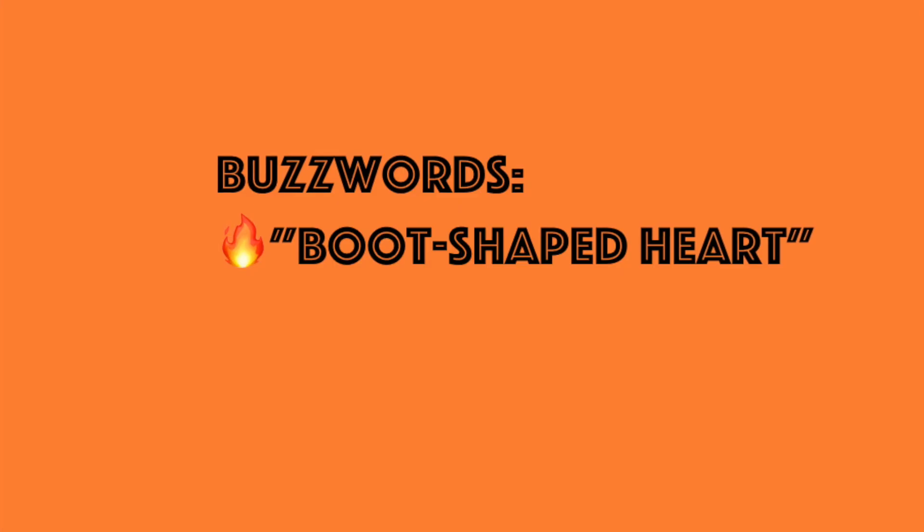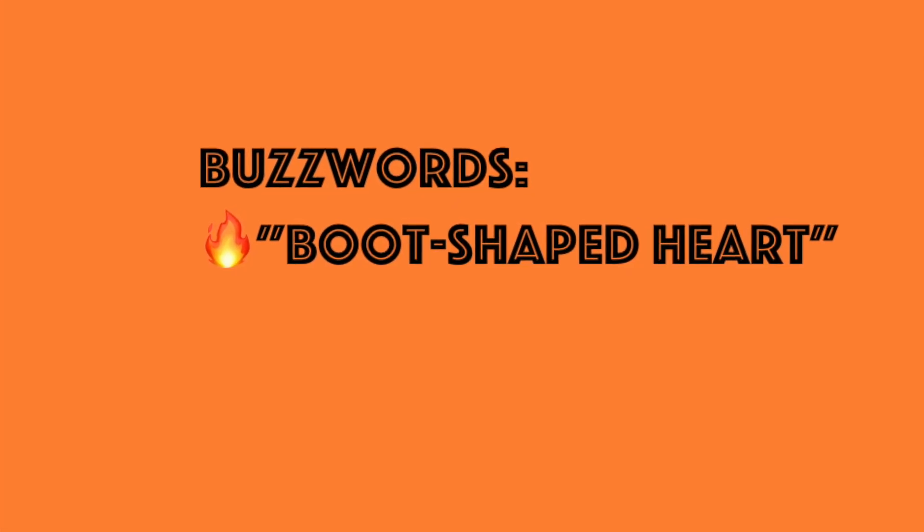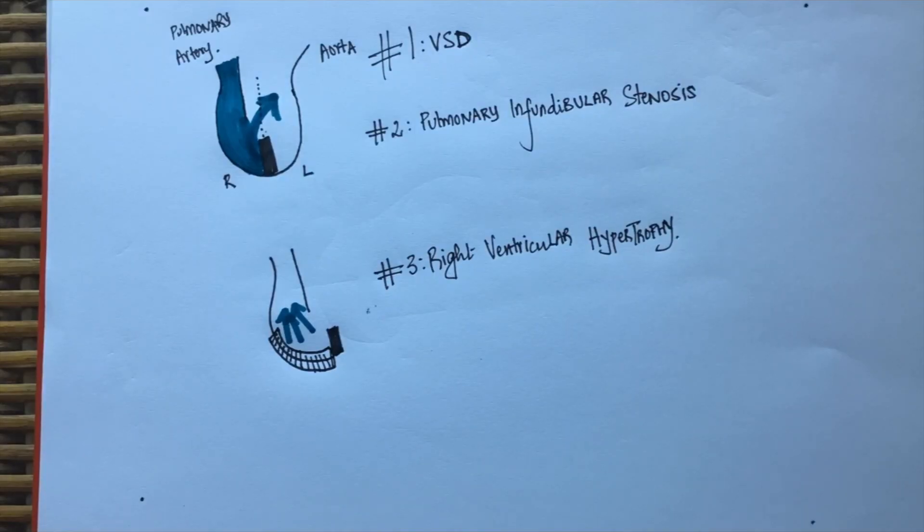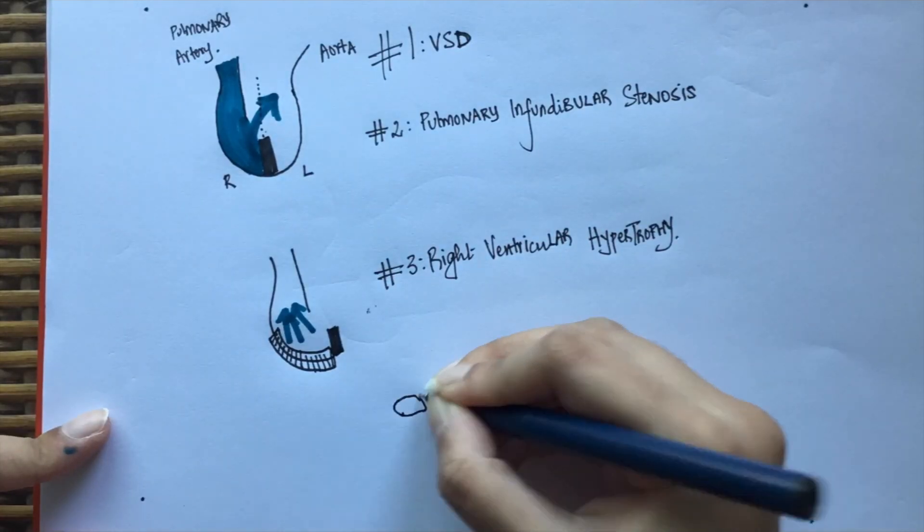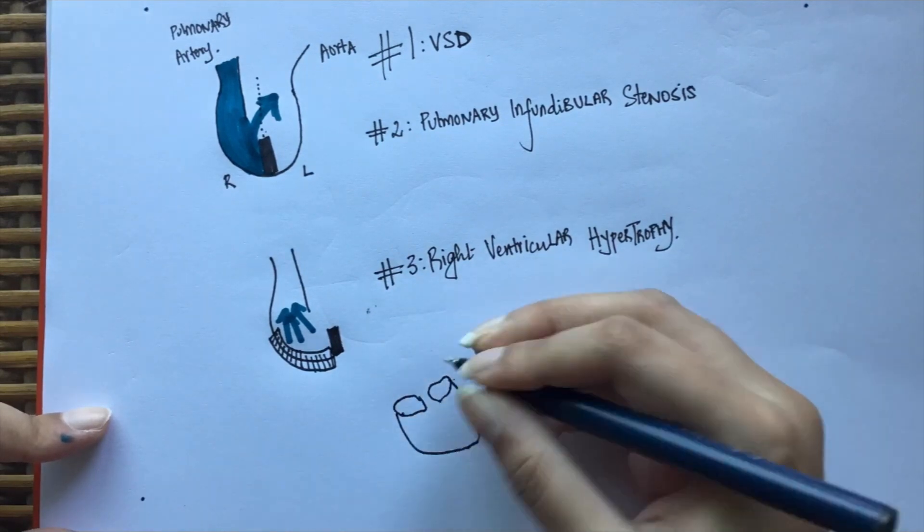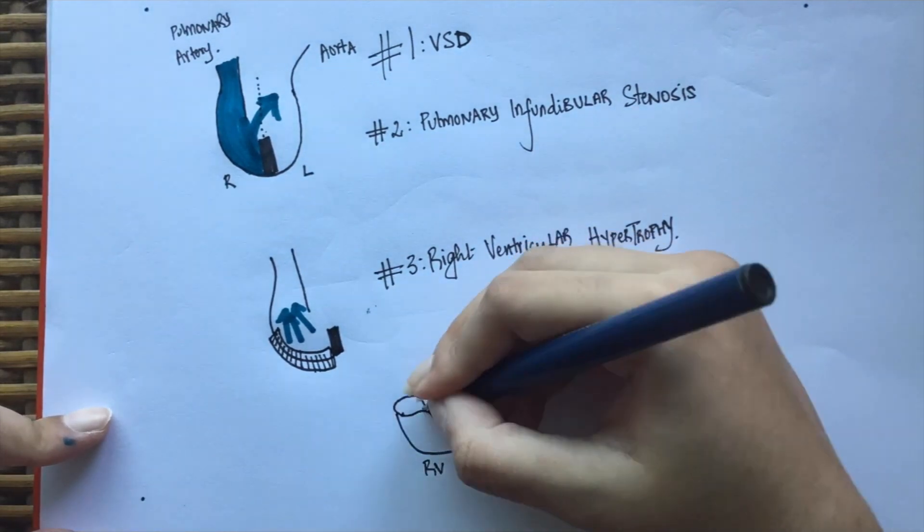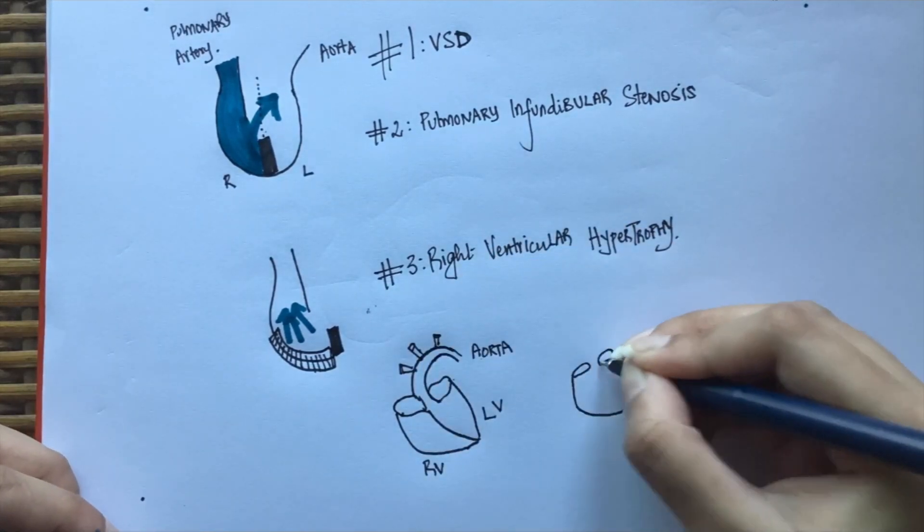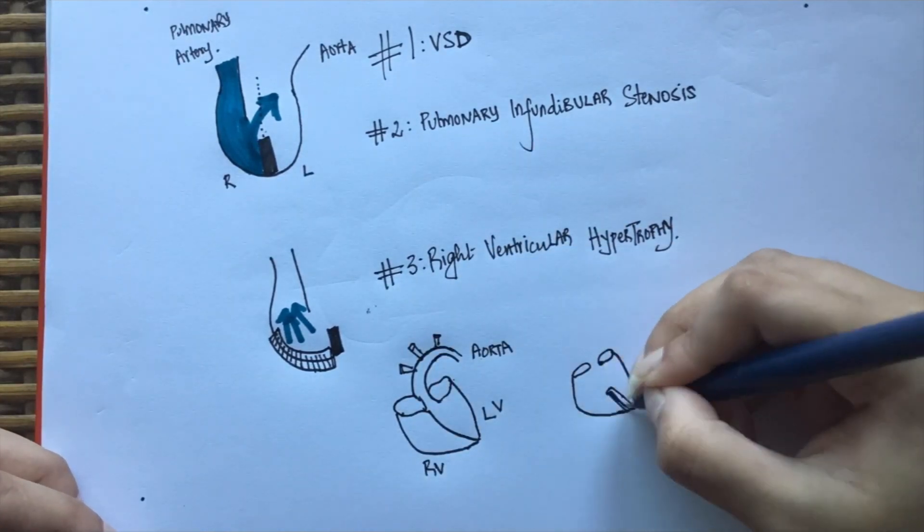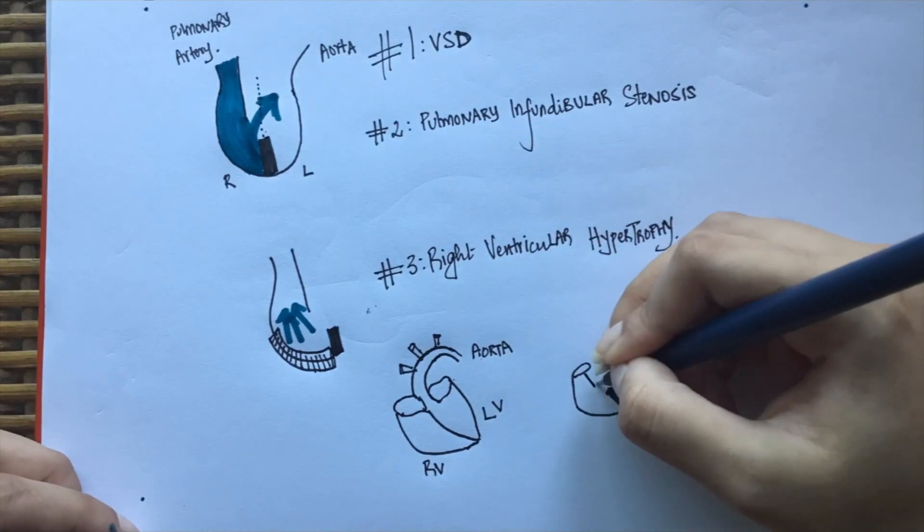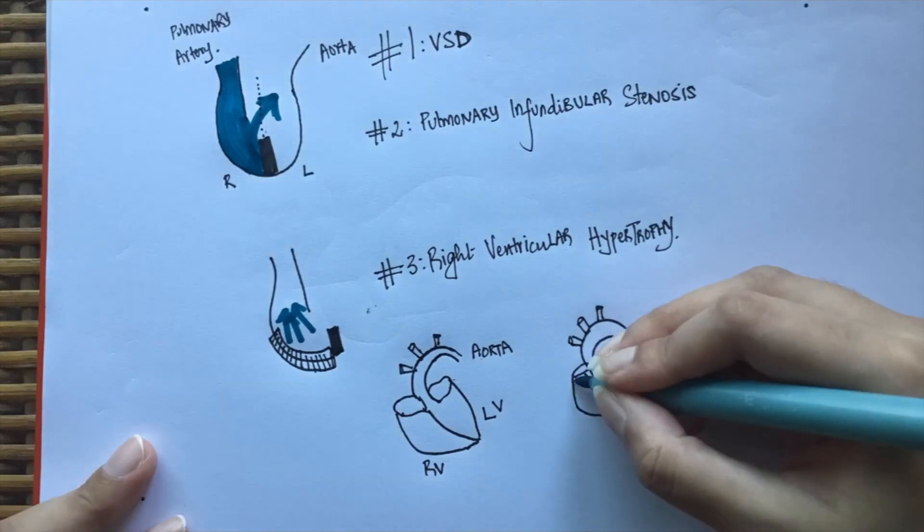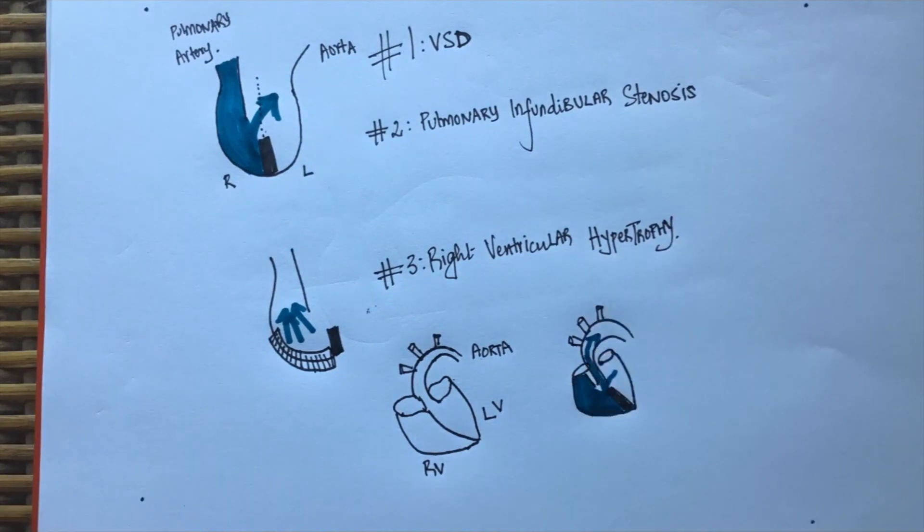This gives the heart a boot-shaped appearance on chest x-ray. In a normal heart, the aorta leaves from the left ventricle. In case of the tetralogy of Fallot, the aorta shifts a little bit to the right and is located just above the ventricular septal defect. This results in the fourth feature, overriding aorta.